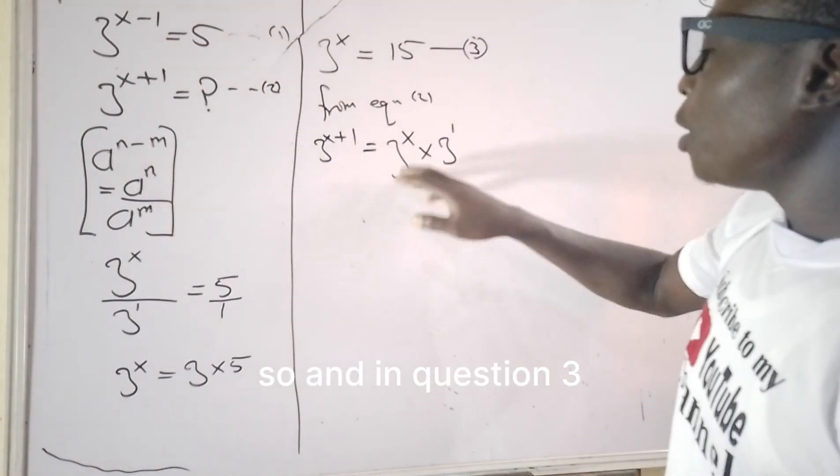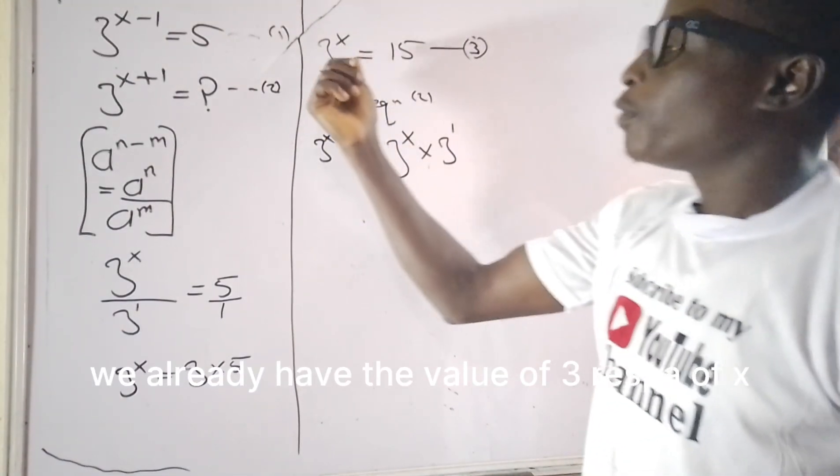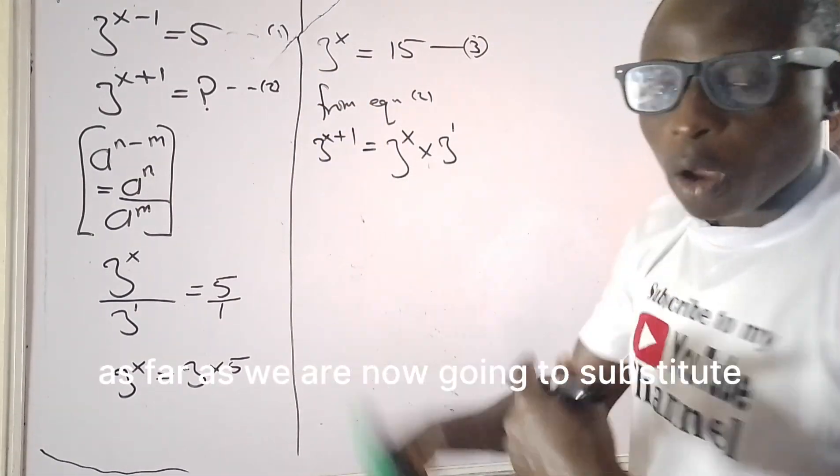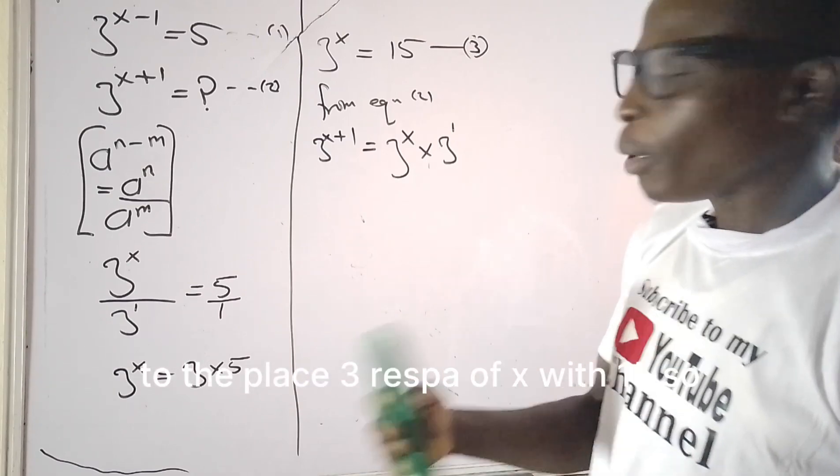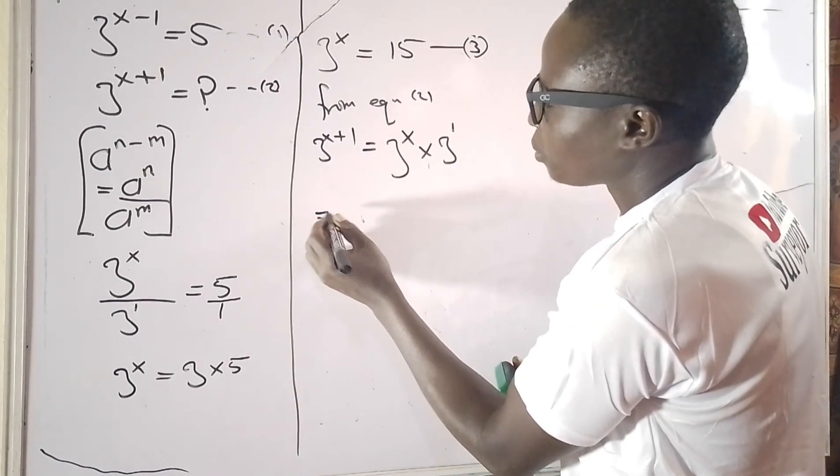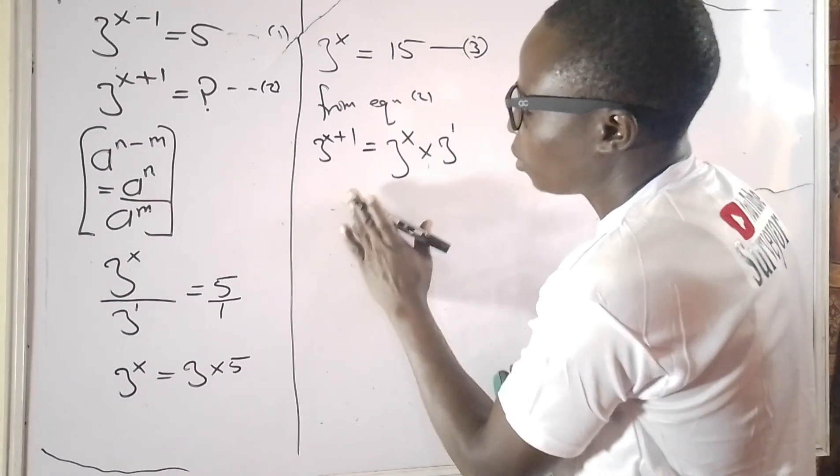In equation 3, we already have the value of 3 raised power of x. So instead of this 3 raised power of x, we are now going to substitute and replace 3 raised power of x with 15.